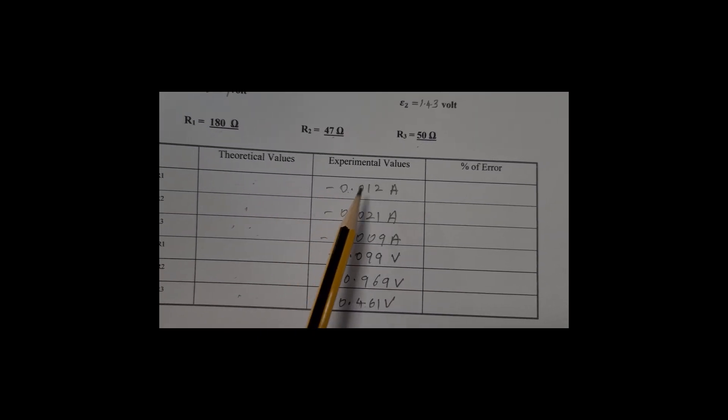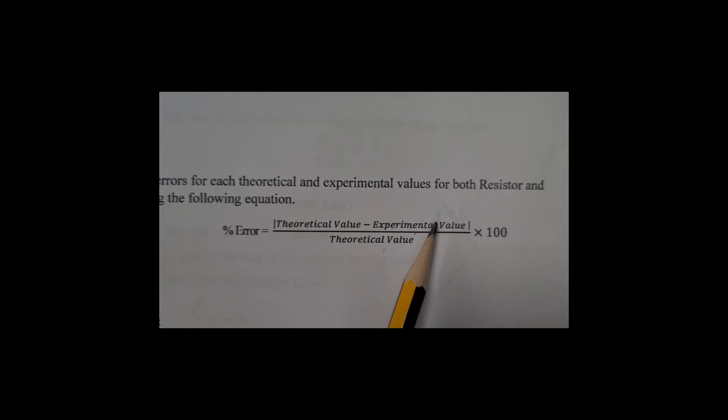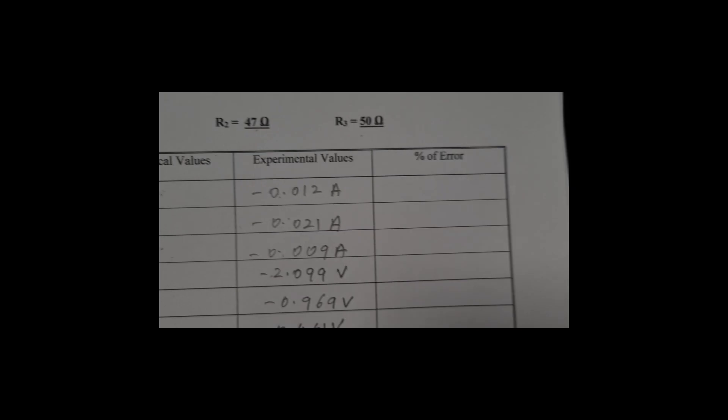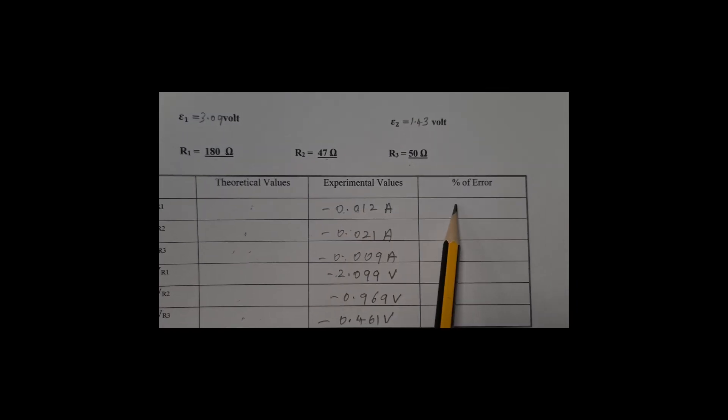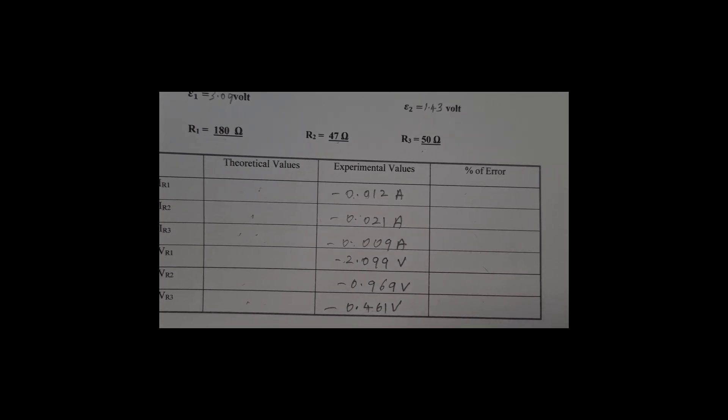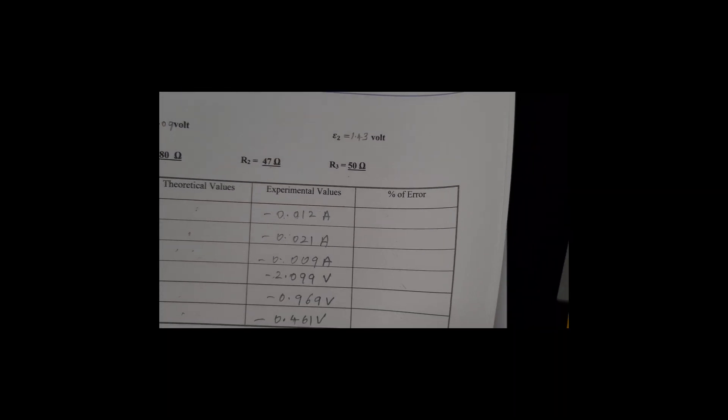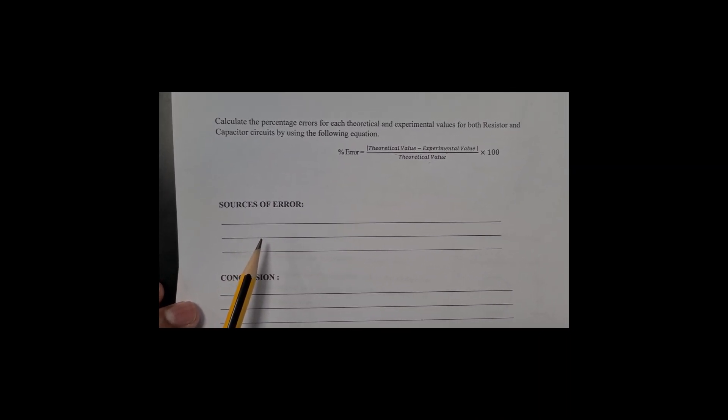Using the formula: percentage error = (theoretical value minus experimental value) divided by theoretical value, multiplied by 100 (take the absolute value), we calculate the percentage error for each quantity I1, I2, I3, V1, V2, V3 separately. The error should be as low as possible. Finally, record the sources of error and write a short conclusion.